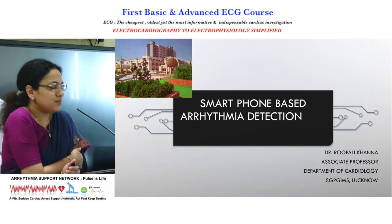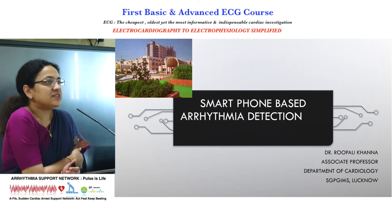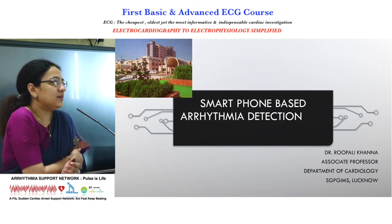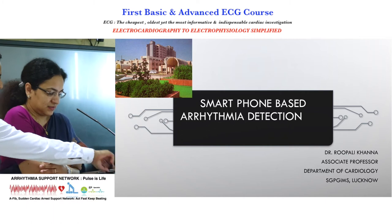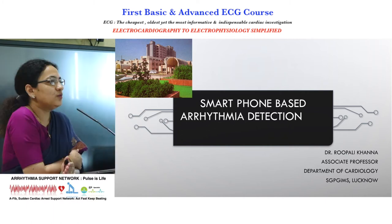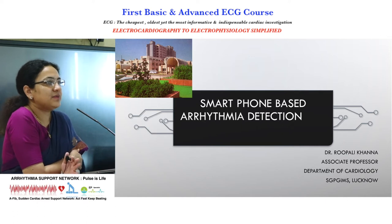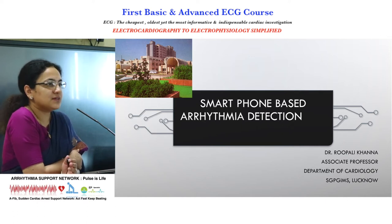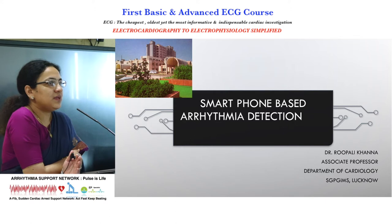Arrhythmias occur whenever there is an irregularity in the rhythm, or the mechanism from where the rhythm starts — from SA node, to AV node, to ventricle — gets disrupted. That is recognized as arrhythmia.